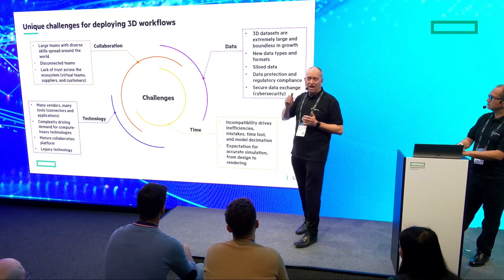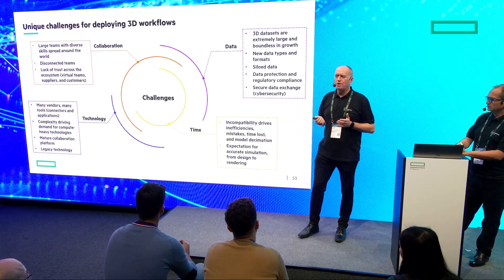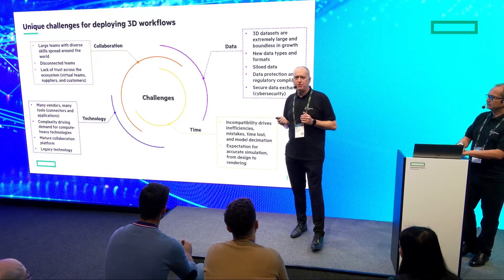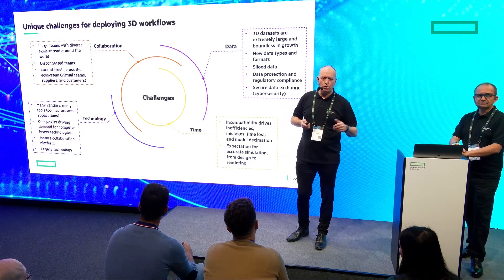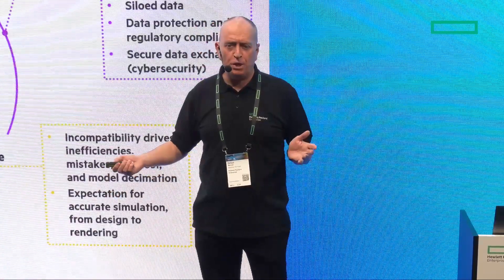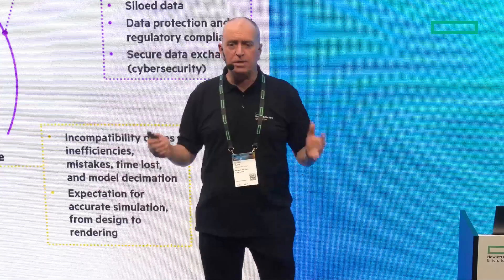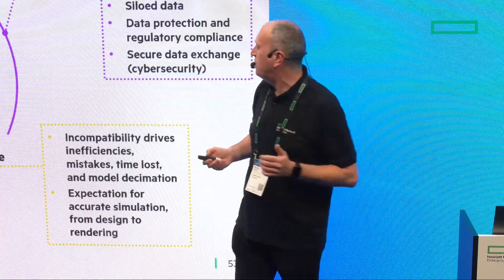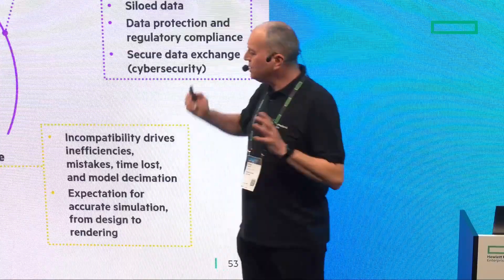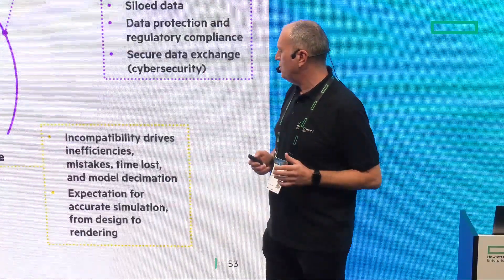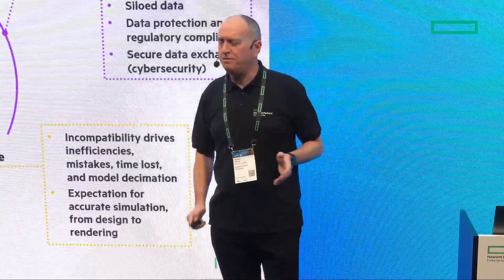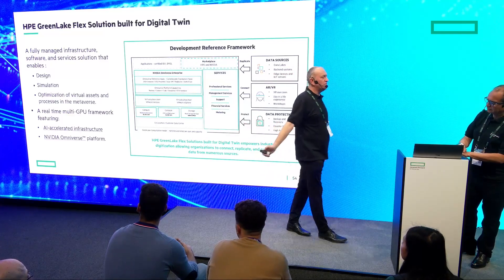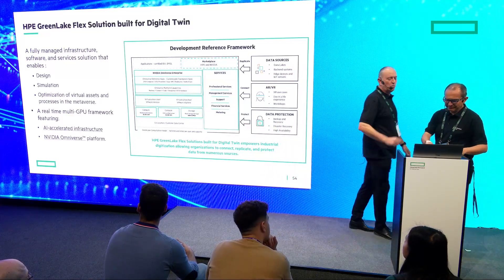Compatibility and data management is really important. A large airplane manufacturer had one design function in one country, half of it in another country, using two different bits of software. When they came to physically build the aircraft, the bits didn't fit because they'd used incompatible software. Siloed data — getting all this right is really important, and incompatibility drives inefficiencies. We've solved this problem, and I'm going to hand over to Jose to go through what we've done.